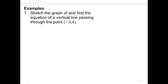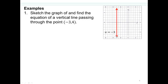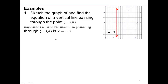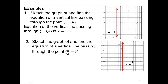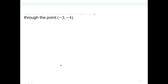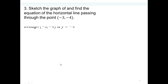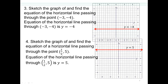To sketch and find the equation of a vertical line passing through (negative 3, 4): here's the coordinate axis, here's x equals negative 3, which is a vertical line, so the equation is x equals negative 3. For a vertical line passing through (1/2, negative 9), x equals 1/2 is the vertical line, so the equation is x equals 1/2. For horizontal lines, it will be y equals: y equals negative 4, y equals 5 — that's how you get horizontal lines.